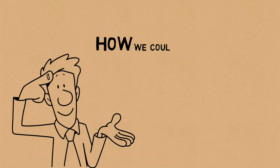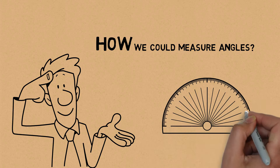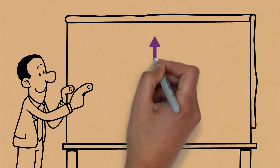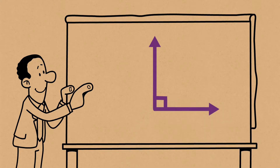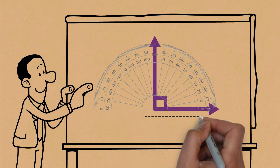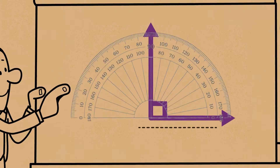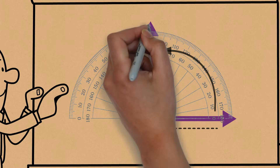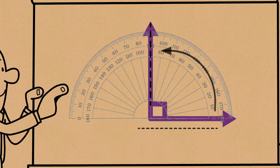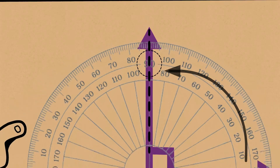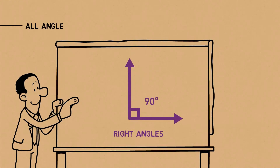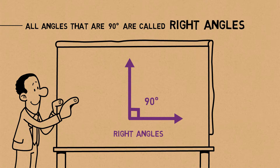We can measure angles using a protractor, an instrument like this that you would find in your compass box. When you're measuring angles, first you need to make sure that the baseline of the protractor is at the base of the angle. Then you need to start from zero and go up until the place where the other line stops. So we've got 90 degrees here, and all angles that are 90 degrees are called right angles.